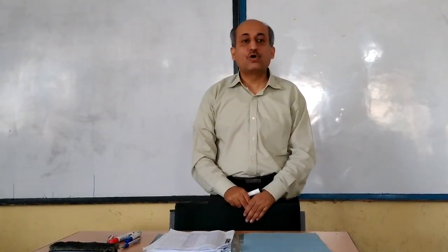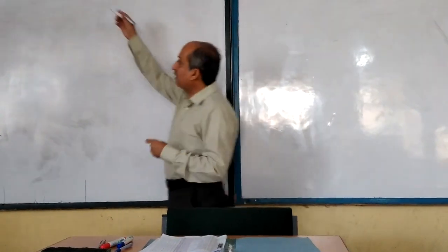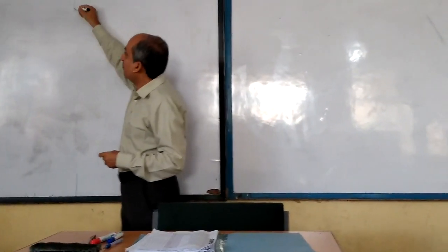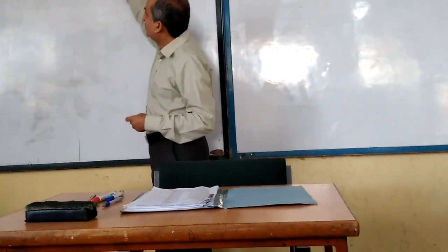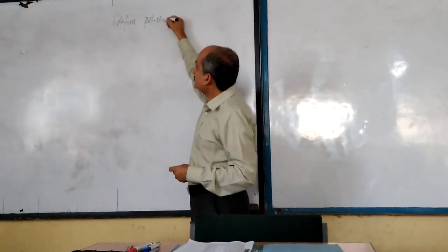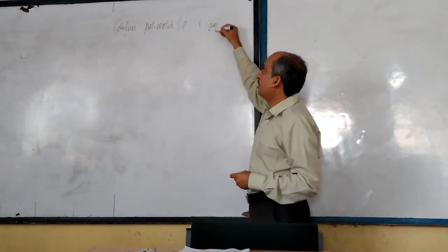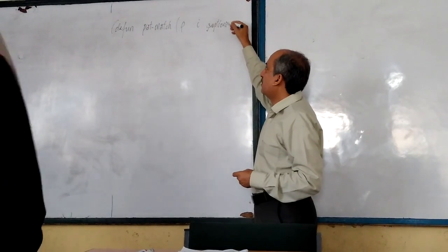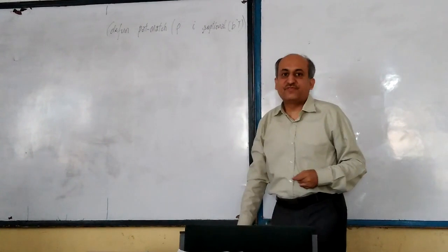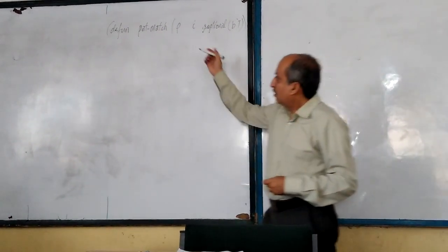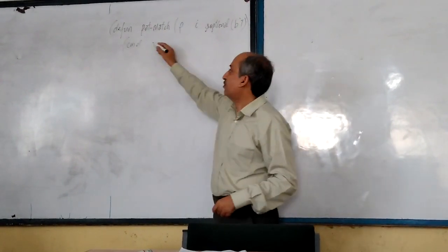We'll discuss the core of the pattern of aspects. The core which we have written in the last section, I'm going to just rewrite that code. In this language, the pattern and function is being defined with three arguments: pattern, input, and the third argument is optional, B, which by default is true. We have already written that code, I'm just rewriting it.